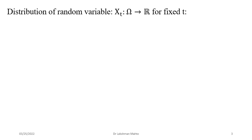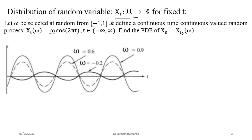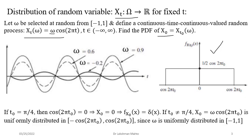Before discussing central representation, let's correct a result from the last lecture. We had a sinusoidal signal with random amplitude, where the amplitude was uniformly distributed from minus one to one. The question was to find the PDF of X(t_0) — the random variable at time t_0. Several realizations of this random process were shown and the PDF of X(t_0) was plotted.